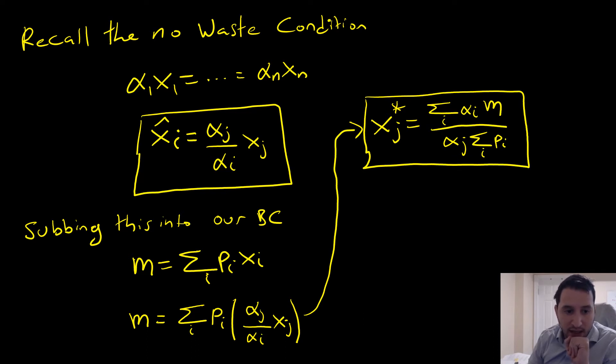So we're going to pick any two goods here. In general, we have alpha_i * x_i equals alpha_j * x_j, and we get this result here.